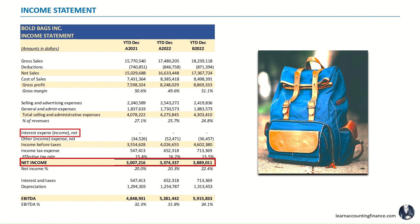Included in this number is interest expense or income and income tax expenses. These have already been included or considered when you arrive at the net income. So if you have an interest expense, that would be deducted from your profit. If you have interest income, that would be added. Similarly, if you have income tax expense, that is already deducted, then you arrive at the net income.